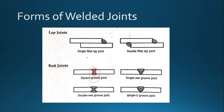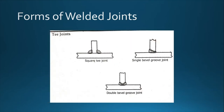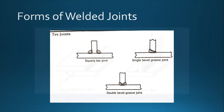These are the forms of welded joints. For T-joints, the end of one plate rests on the surface of another plate, forming a T-shape. The welding can be applied in different orientations on a T-joint.